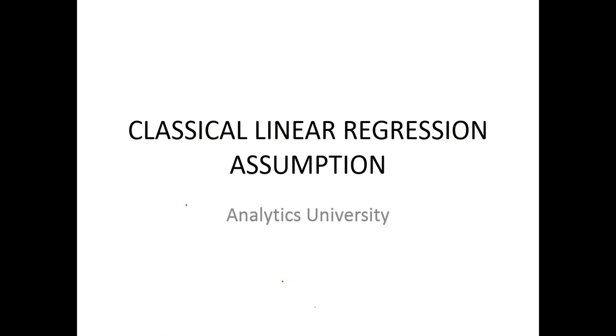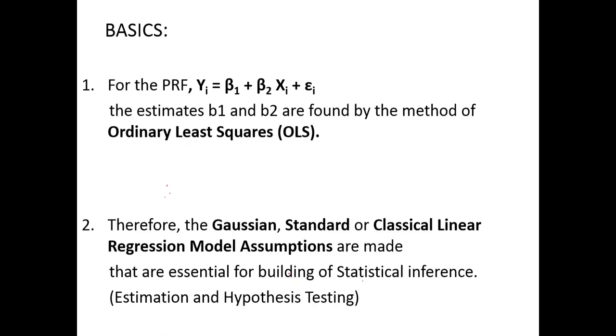In this video I am going to talk about the classical linear regression assumptions. The population regression function looks something like this: yi equals beta1 plus beta2 xi and the error term. Beta1 and beta2 are the parameters, and we estimate these parameters using ordinary least squares. So we'll talk about the assumptions required in ordinary least squares.